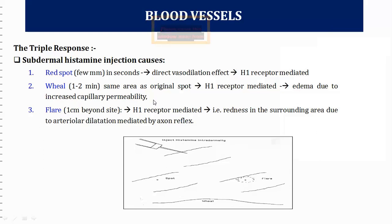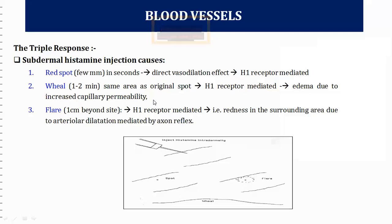An important blood vessel effect is the triple response, seen when histamine is injected intradermally. It consists of a red spot, wheal, and flare. The red spot occurs first because histamine causes vasodilation in that area — capillaries dilate, producing redness. The H1 receptor mediates this, since capillaries have H1 receptors.